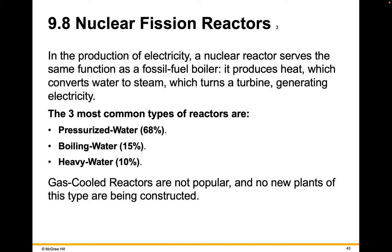In the production of electricity, a nuclear reactor serves the same function as a fossil fuel boiler — it produces heat, which converts water to steam and turns a turbine, generating electricity. The three most common types of reactors are pressurized water, boiling water, and heavy water. Gas-cooled reactors are not popular, and no new plants of this type are being constructed.